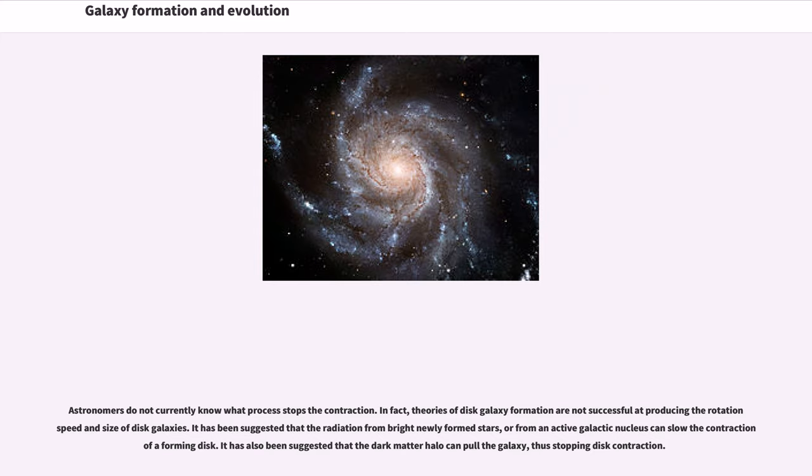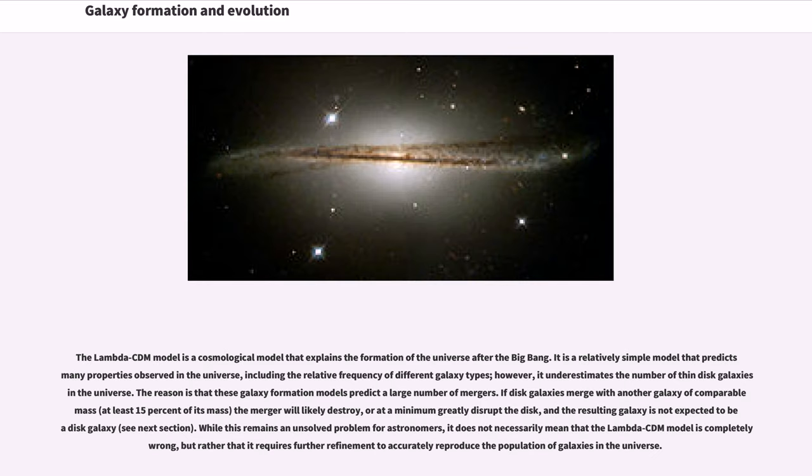The Lambda-CDM model is a cosmological model that explains the formation of the universe after the Big Bang. It is a relatively simple model that predicts many properties observed in the universe, including the relative frequency of different galaxy types. However, it underestimates the number of thin disk galaxies in the universe. The reason is that these galaxy formation models predict a large number of mergers. If disk galaxies merge with another galaxy of comparable mass, at least 15% of its mass, the merger will likely destroy, or at a minimum greatly disrupt the disk, and the resulting galaxy is not expected to be a disk galaxy. While this remains an unsolved problem for astronomers, it does not necessarily mean that the Lambda-CDM model is completely wrong, but rather that it requires further refinement to accurately reproduce the population of galaxies in the universe.